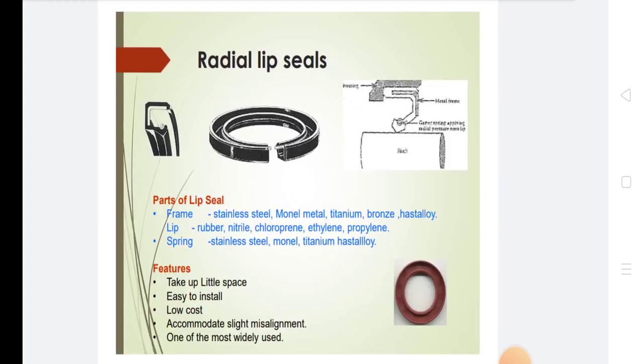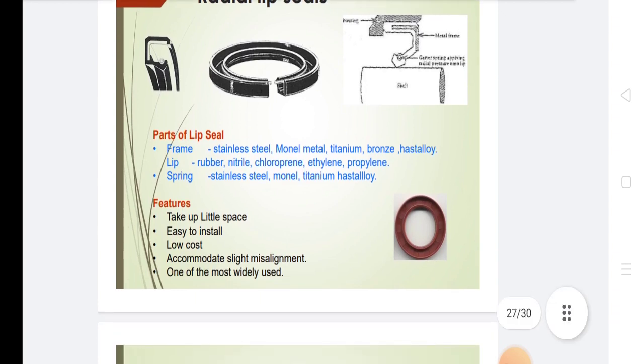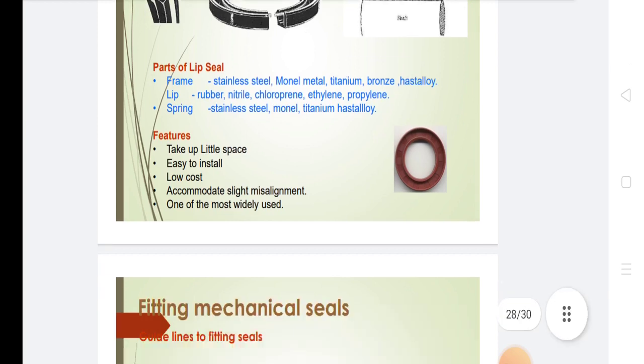Parts of a lip seal include a spring and leaf spring. Features include: takes up little space, easy to install, low cost, accommodates slight misalignment, and it is one of the most widely used seals.